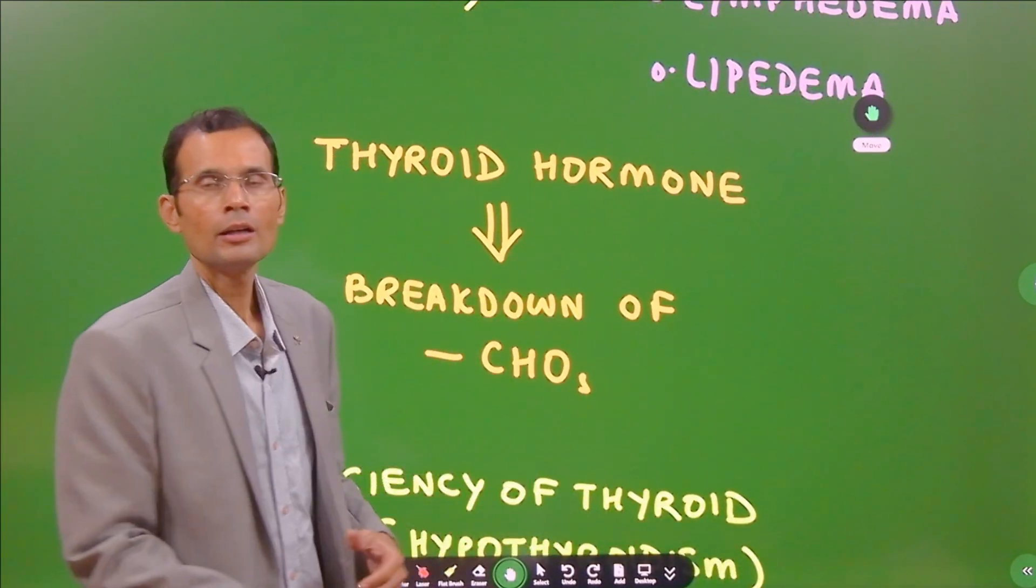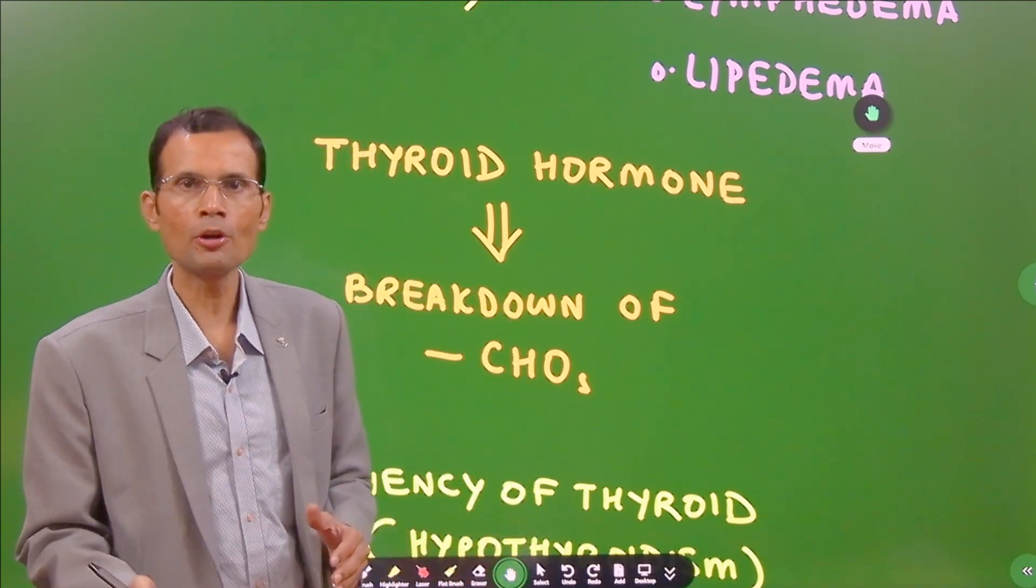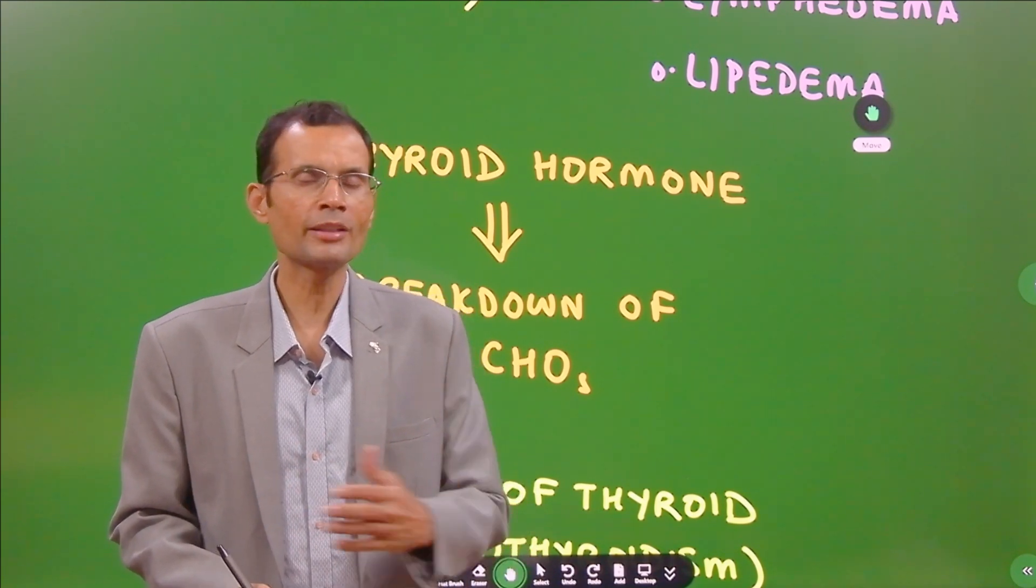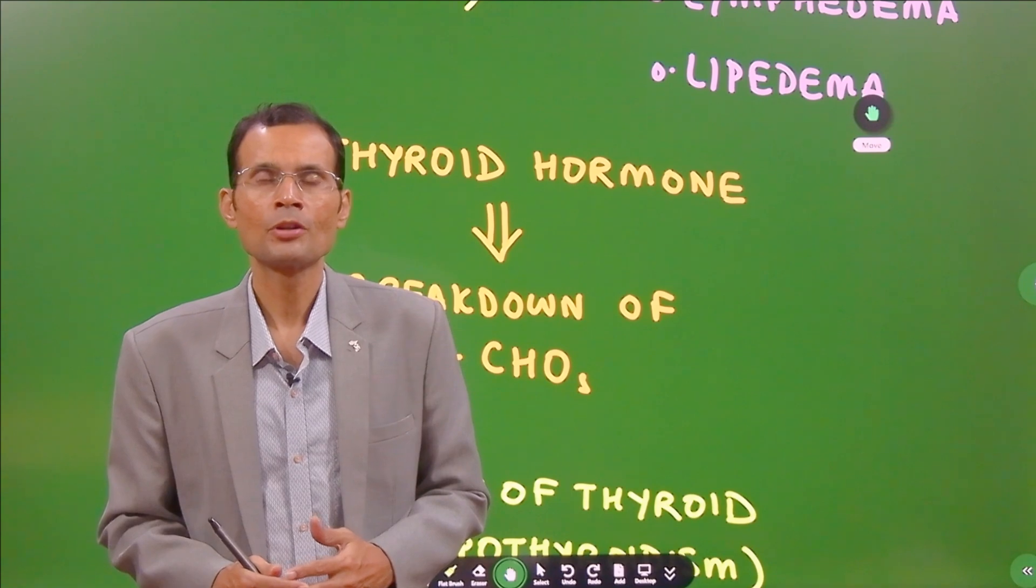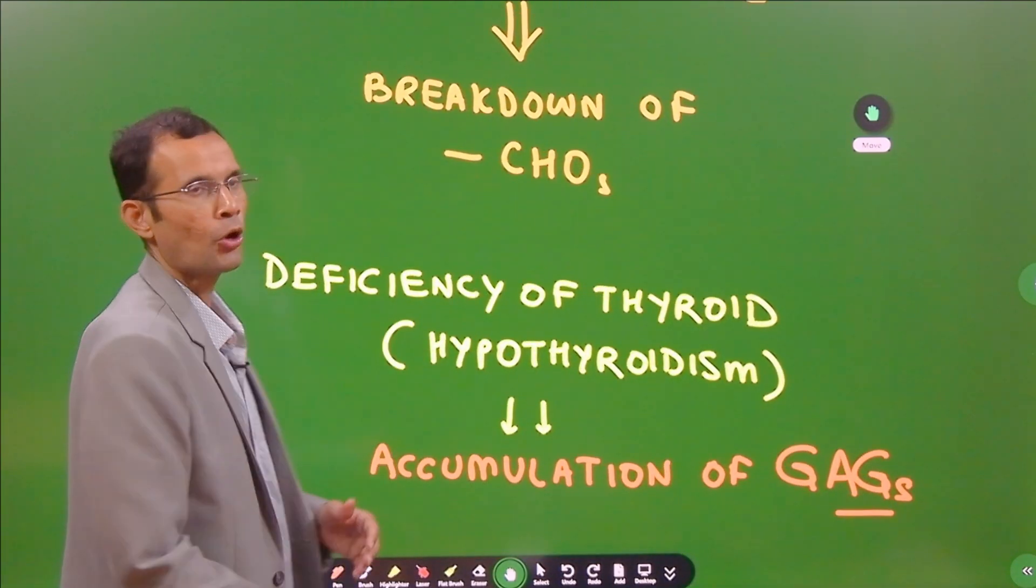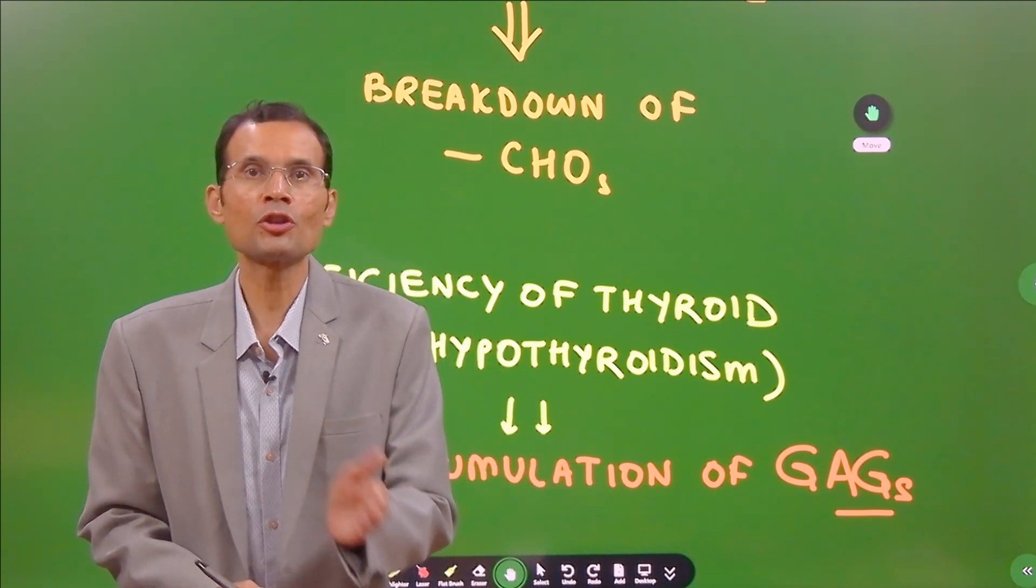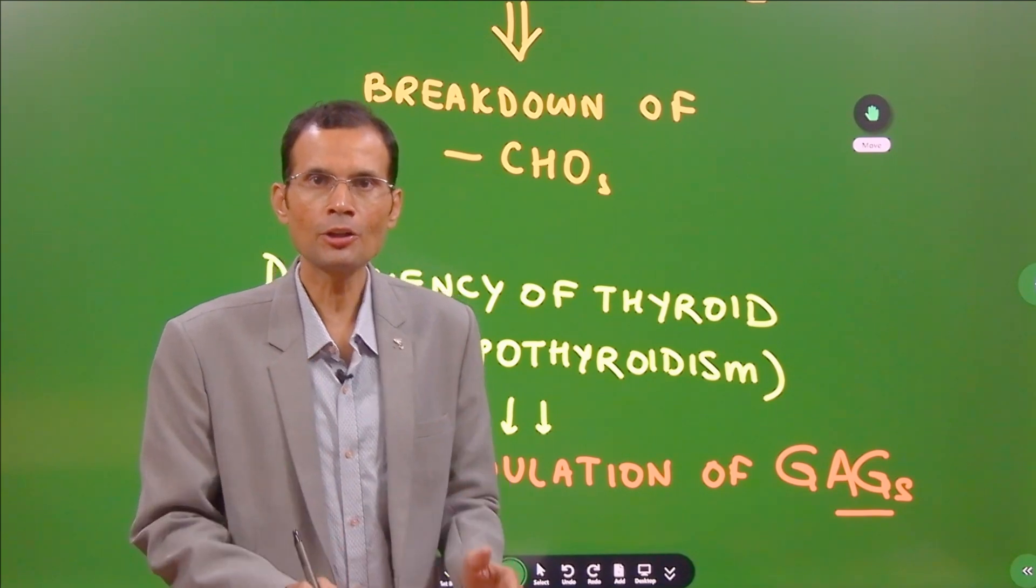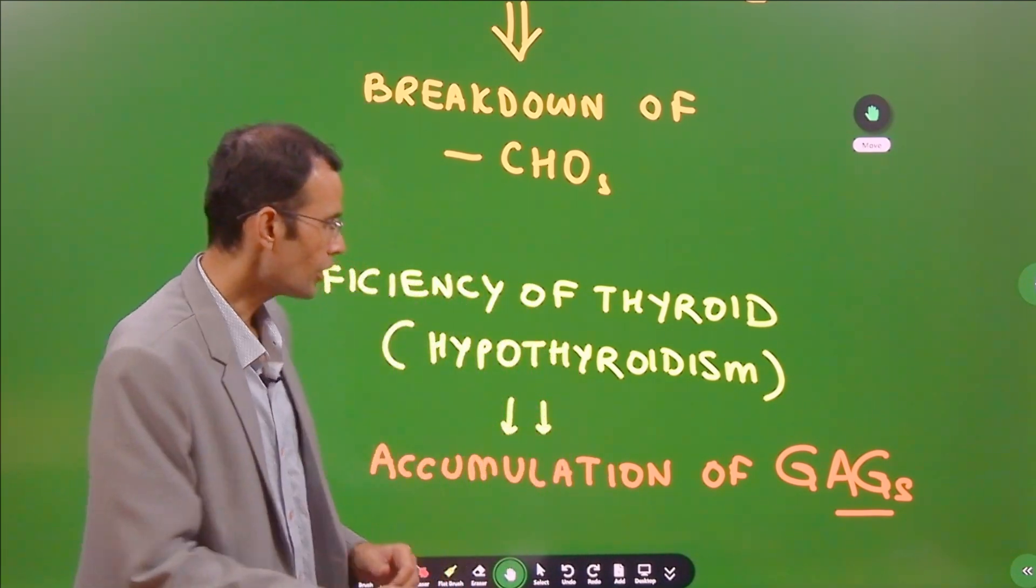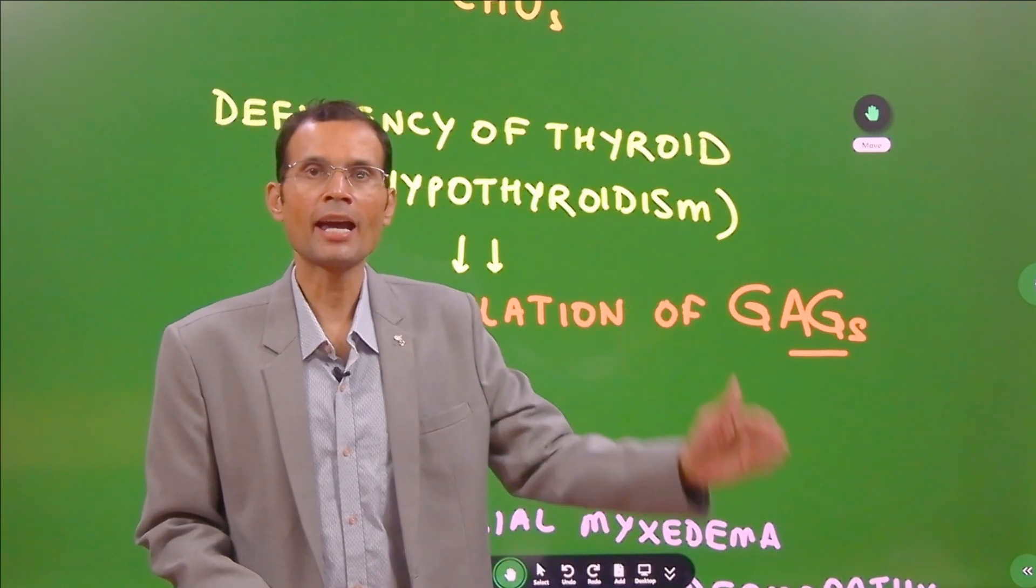Why does that happen? Normally, the thyroid hormone is required for the metabolism and breakdown of certain nutrients—that includes carbohydrates, proteins, fats, etc. In the absence or deficiency of thyroid hormone, this breakdown does not happen. Particularly, we are talking about mucopolysaccharides or the GAGs.